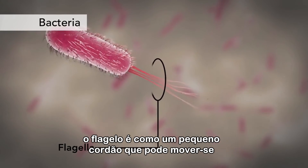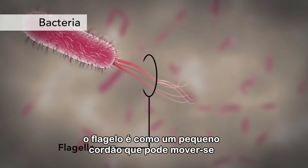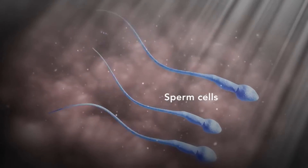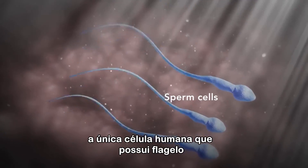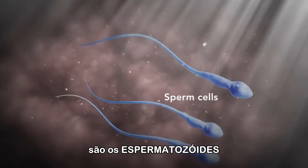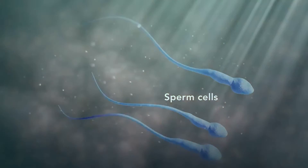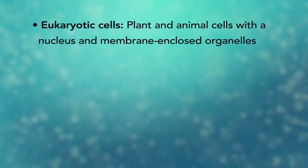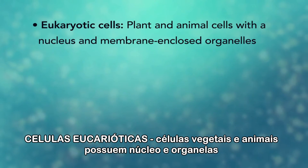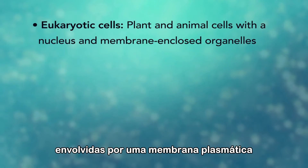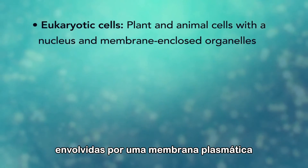Another unique feature in some cells is flagella. Some bacteria have flagella — a flagellum is like a little tail that can help a cell move or propel itself. The only human cell that has a flagellum is a sperm cell.